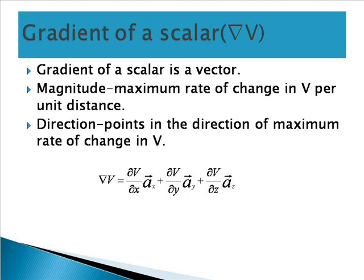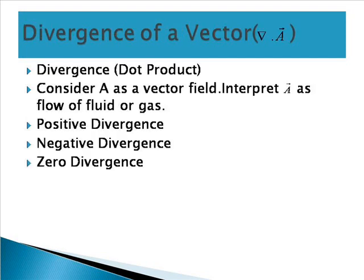The full gradient formula is del v = (∂v/∂x) ax-vector + (∂v/∂y) ay-vector + (∂v/∂z) az-vector. This means ∂v/∂x indicates how much v varies in the x direction, ∂v/∂y indicates how much v varies in the y direction, and similarly ∂v/∂z indicates how much v varies in the z direction. Ax, ay and az are the unit vectors.